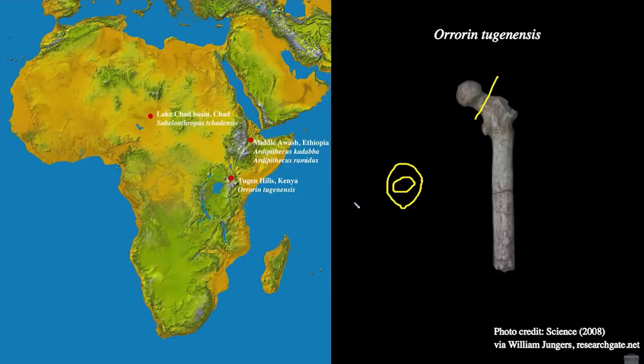In contrast, chimpanzees, because they climb, move bipedally, and move quadrupedally, engage their femur in a lot of different planes of action. If we look at the cross-section of the femoral neck in a chimpanzee, we see a much more symmetrical distribution of bone. The cortical bone, rather than having this asymmetrical pattern, has a much more symmetrical distribution with no clear orientation having greater distribution of bone, meaning no particular orientation of the femur is designed to compensate for greater kinds of force.